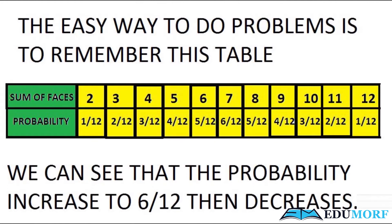Shown here is a table indicating the probabilities of rolling two dice simultaneously, or one dice being rolled twice. The easiest way to do problems is to remember this table, and this table is really easy to remember. In this table, we can see that the probability increases from 1/12 to 6/12 and then decreases back to 1/12.